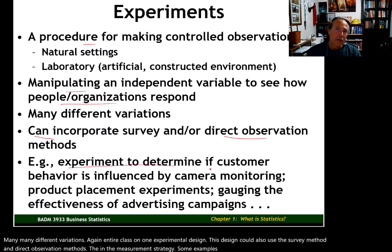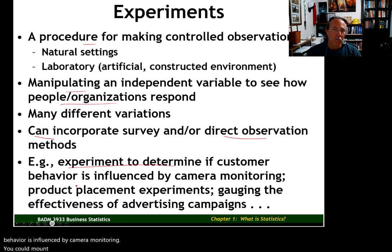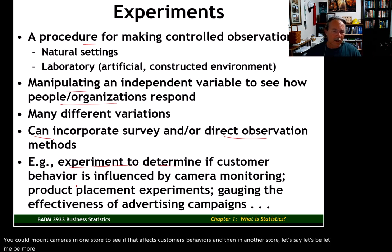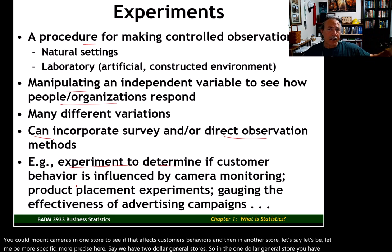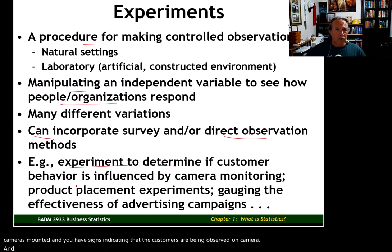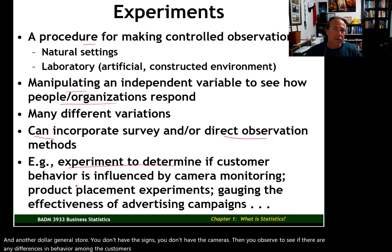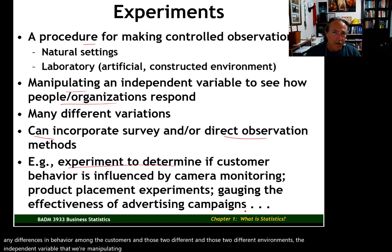One example: an experiment to determine if customer behavior is influenced by camera monitoring. In one dollar-general store, you mount cameras and post signs indicating customers are being observed. In another dollar-general store, you have no signs and no cameras. Then you observe whether there are any differences in behavior between customers in those two different environments. The independent variable being manipulated is the presence or absence of cameras in the space.